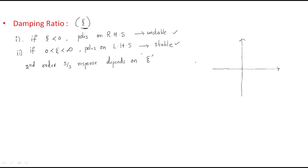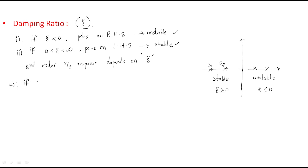Once again, if the poles are in the left half of the s-plane, for example two poles in the left half, then we can say the system is stable and the zeta value is greater than zero. If the poles are in the right half of the s-plane then the system is unstable, and whenever the system is unstable the zeta value is less than zero. So we will substitute different values of zeta and observe the results. Case 1: if zeta equals zero.